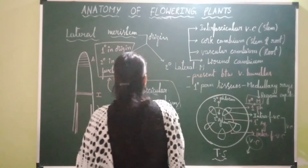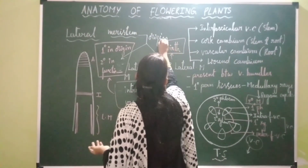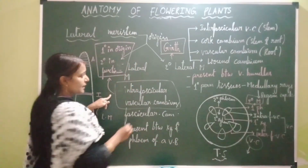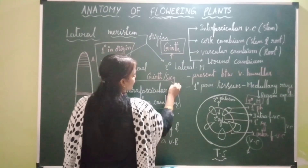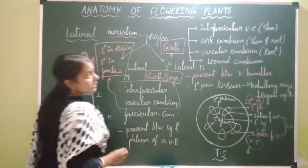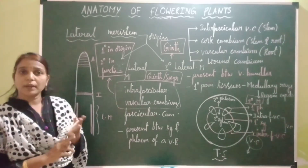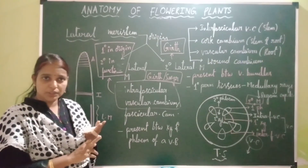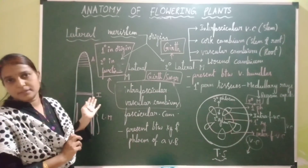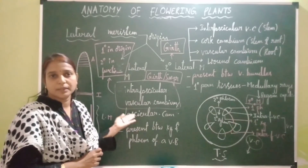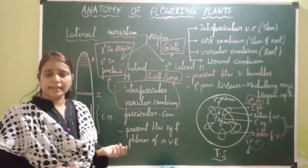Secondary meristems are involved in increasing the girth or diameter of plant organs — that is secondary growth of plants. So this is all about meristems. We studied the characteristic features of meristems, primary and secondary meristems on the basis of origin, and types on the basis of location: apical meristem, intercalary meristem, and lateral meristem — which are two types: primary lateral meristem and secondary lateral meristem. In the next video, I will be starting with shoot apex organization and root apex organization.